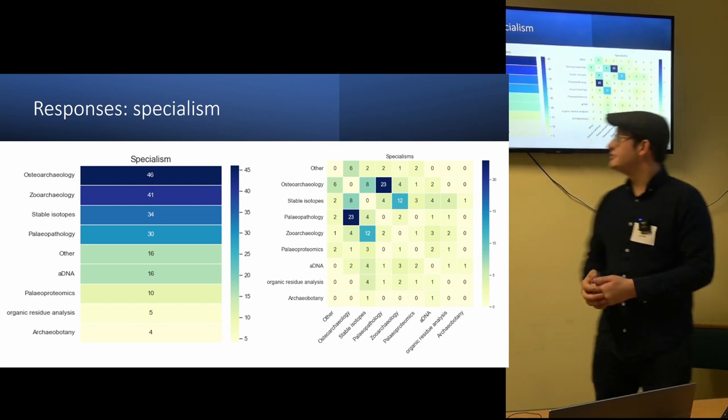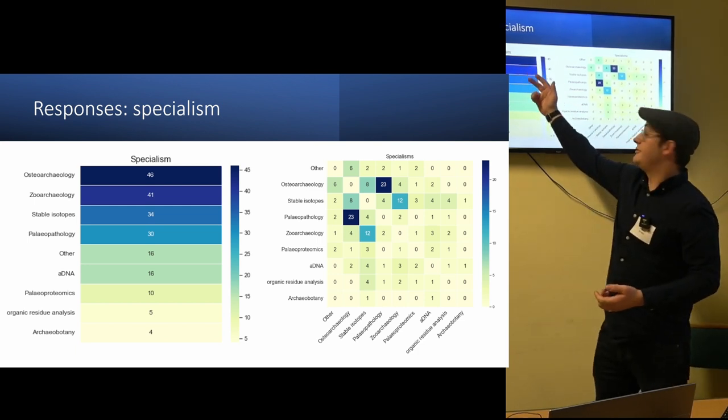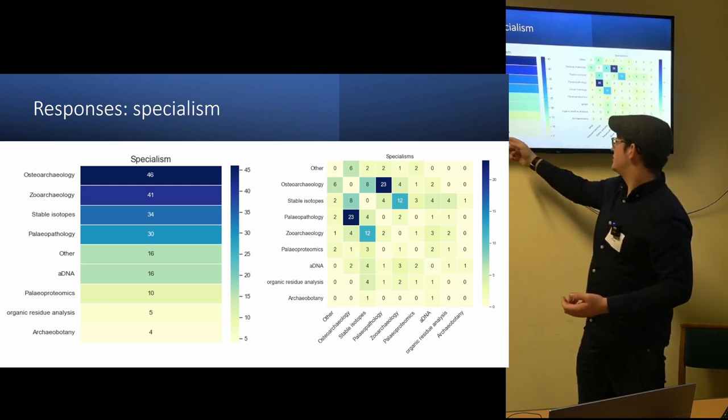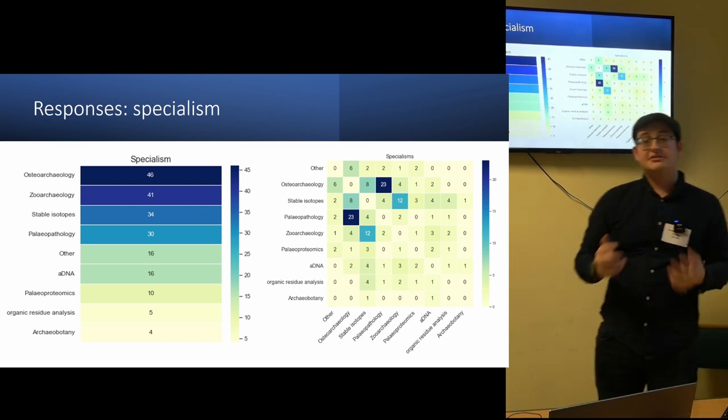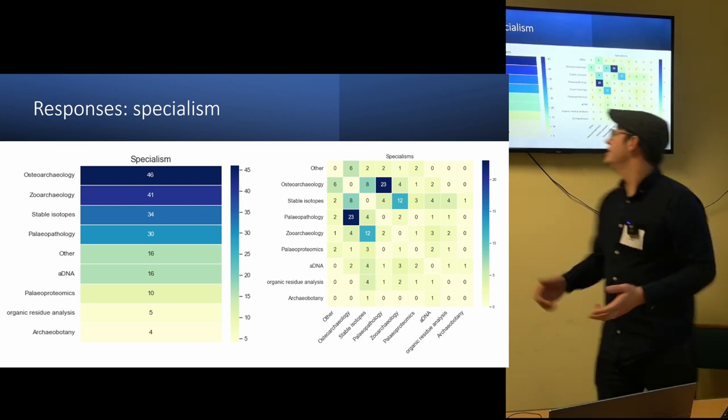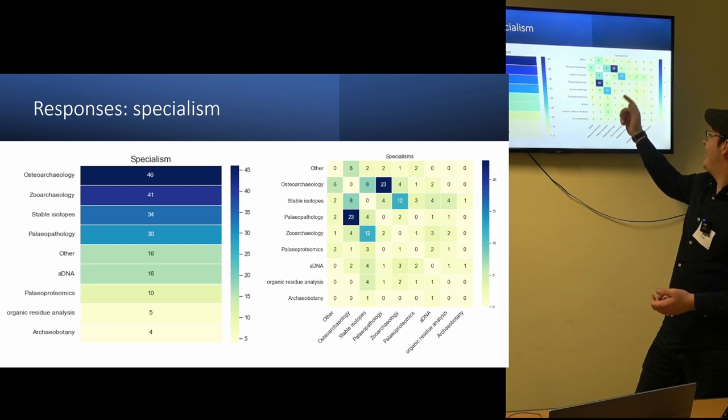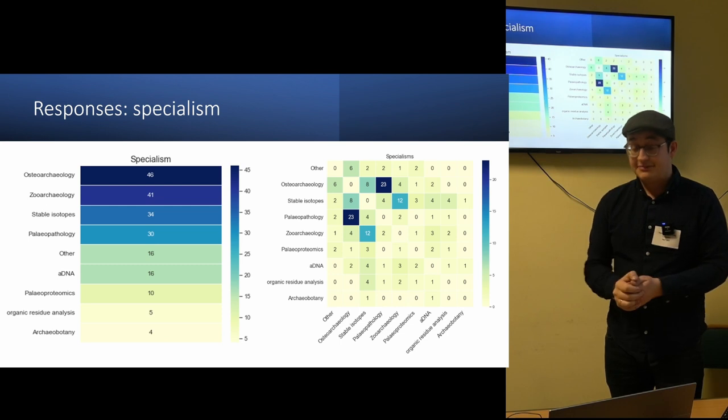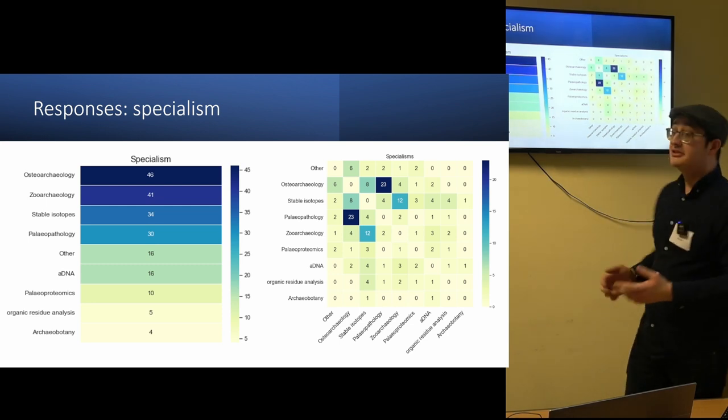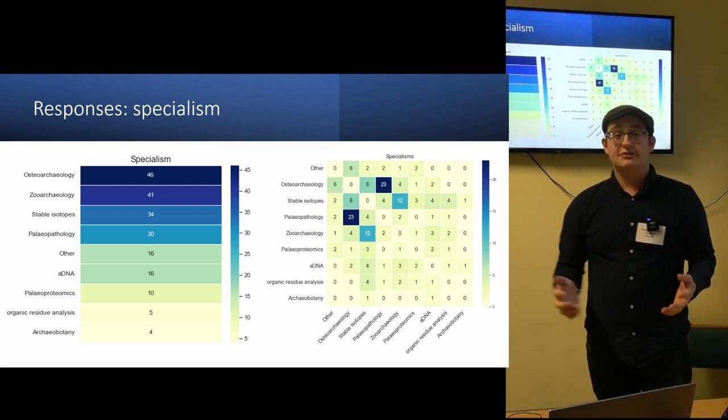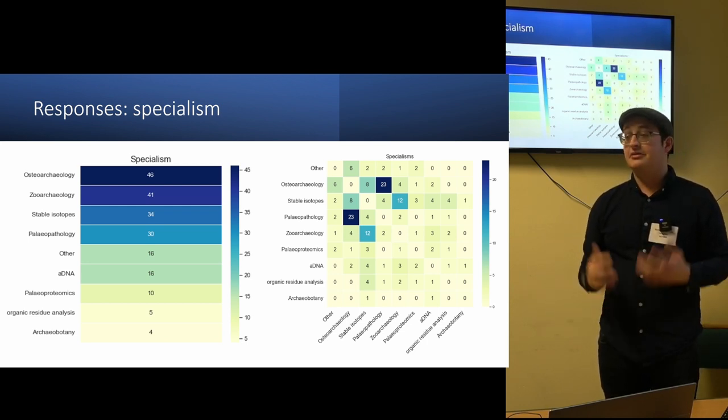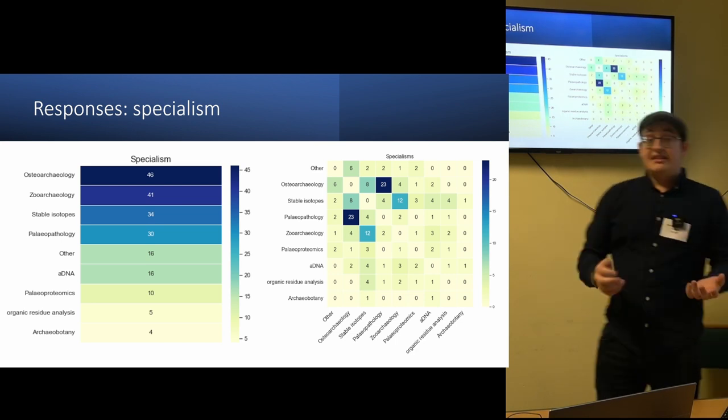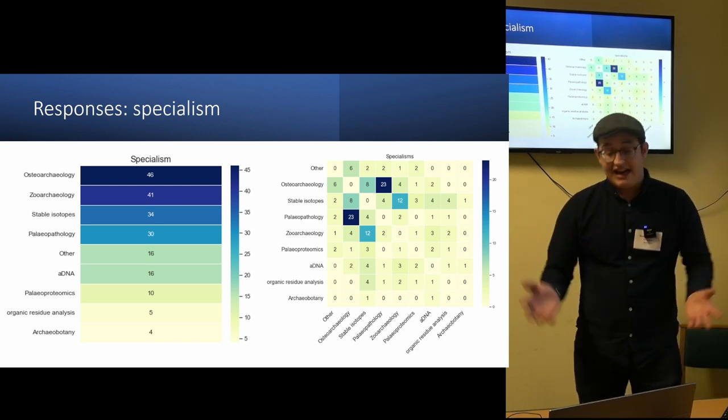In terms of the individual specialisms, as you can tell, osteoarchaeology was the most picked field, whilst the field of archaeobotany was very little chosen. But also, people aren't the specialist in just one field alone. And this can be really shown clearly in this graph here, where paleopathology and osteoarchaeology are very common to be a specialist in both of them. So as a result, when looking at results later, it's important to consider that maybe some of them are doing different data practices for individual fields, but it's hard to necessarily derive exactly how they are doing that.